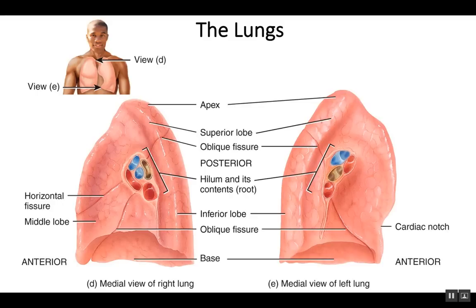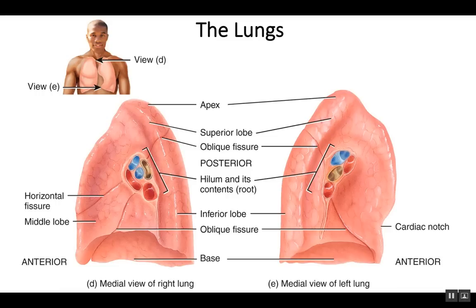This is a medial view of each lung, which adds the structure known as the hilum, or root. This is essentially how you can get in or out of a lung. You're going to have blood vessels in the hilum — the pulmonary arteries and pulmonary veins — for blood going in and out. There are also airways entering or exiting the lungs, and lymphatics to drain excess interstitial fluid from the lungs. The top of the lungs is known as the apex, and the bottom is known as the base.